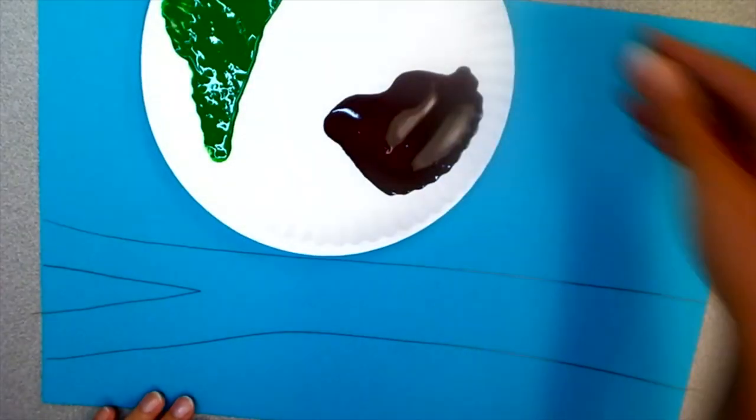You're going to need some brown and some green paint. First, paint your branch brown.